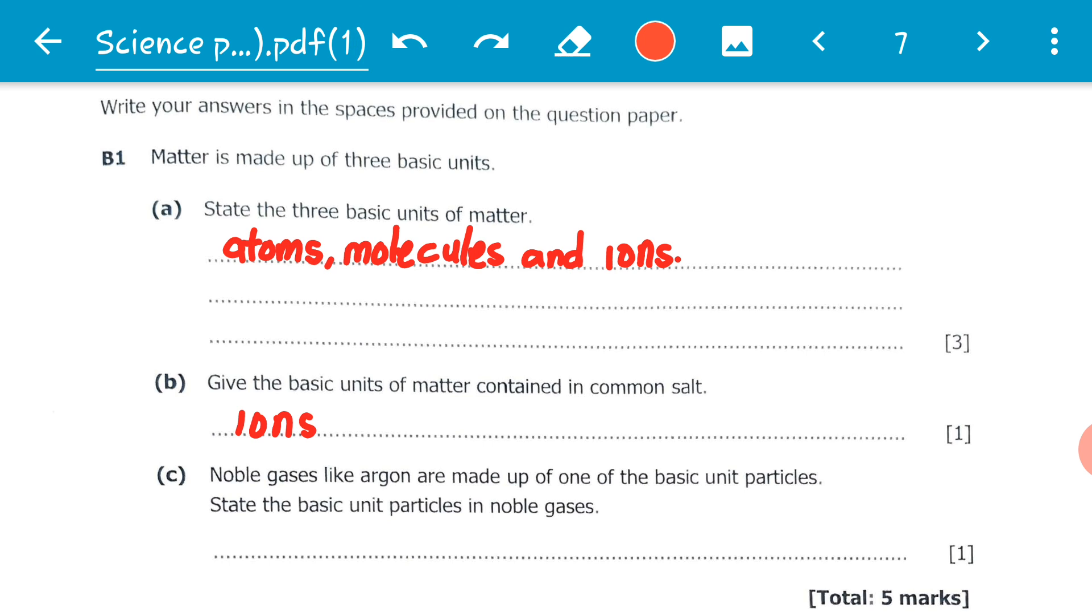Question C: Noble gases like argon are made up of one of the basic unit particles. State the basic unit particles in noble gases. Remember, noble gases are inert gases, they are very unreactive gases. Therefore, noble gases do not form compounds like every other element. Therefore, we will only find